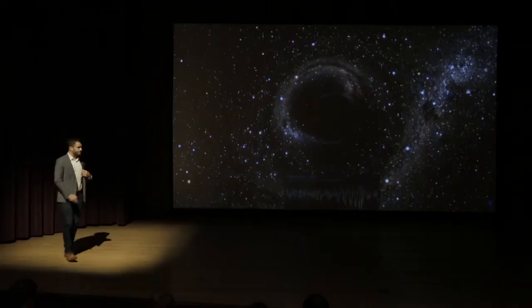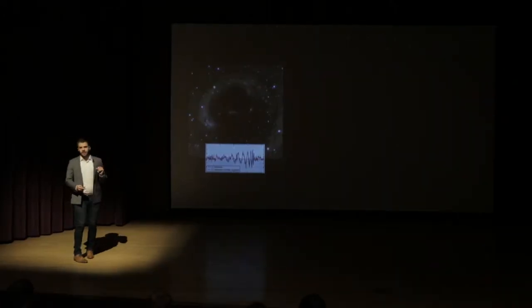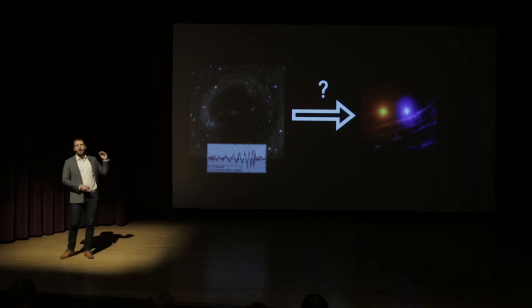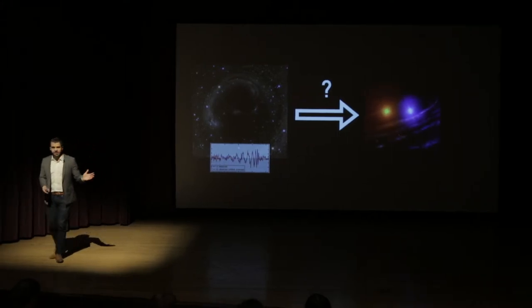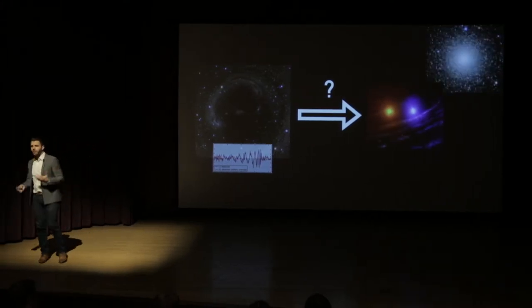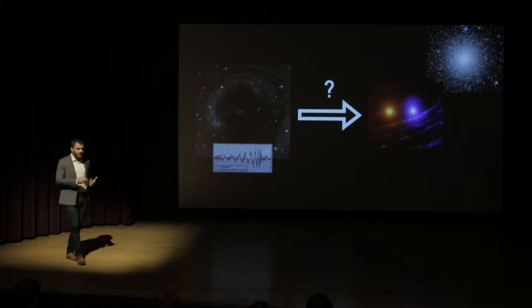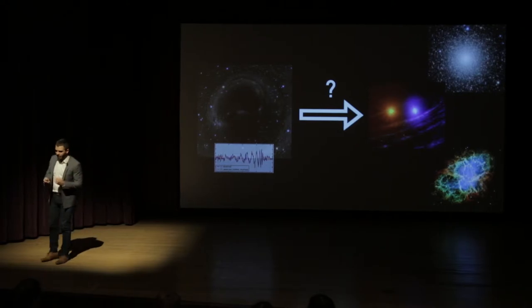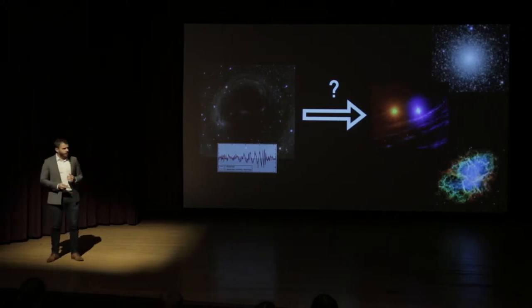So how can we take these last words of this system and use it to actually infer properties about the objects that permeate our universe? That's the research that I particularly am interested in. Taking this signal, this new sense that we have for our universe, and using it to learn about the evolution of stars, the environments that form black holes in which stars evolve in, and even the processes that affect the depths of stars, like supernovae themselves.